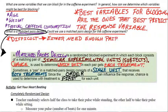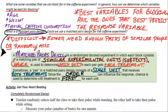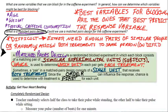So we either need enough pairs of similar individuals or we randomly assign both treatments to the same person, but it would have to be on different days because the treatments would obviously not be independent. They would influence each other.